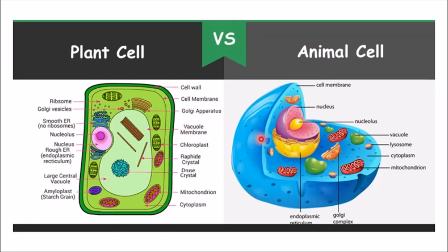There are three main differences between the plant cell and the animal cell. Another main difference is that in the plant cell, we have the presence of chloroplast. The green color of the plant is given because of chloroplast. In the animal cell, chloroplast is absent because we cannot perform photosynthesis — we cannot prepare our own food.